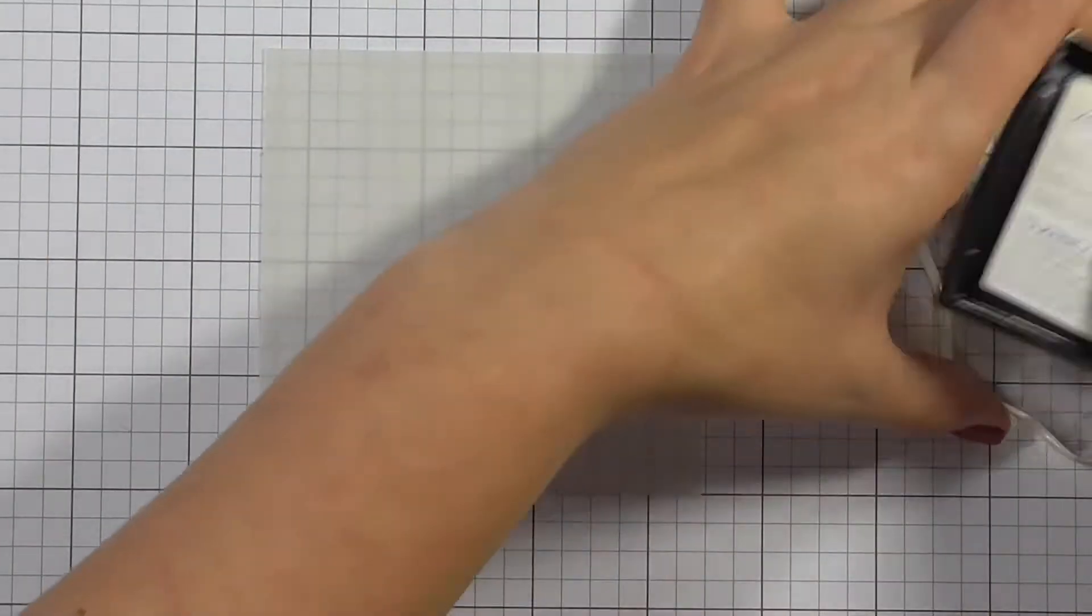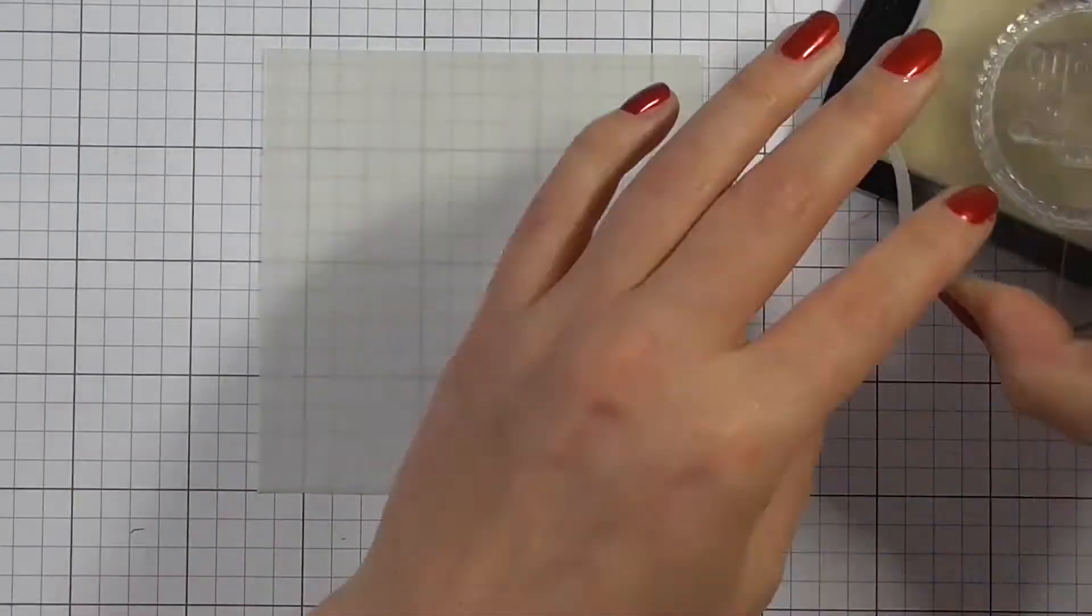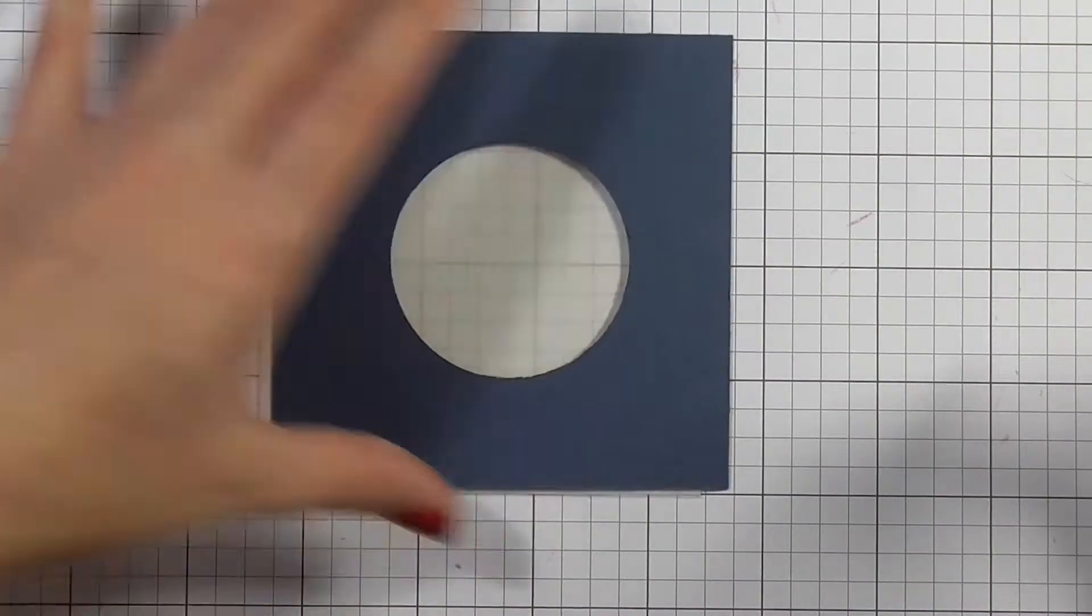So I've took the circle stamp and the Merry and Bright and I'm just inking those up with Versamark, and I'm going to stamp that down on some heat resistant acetate.